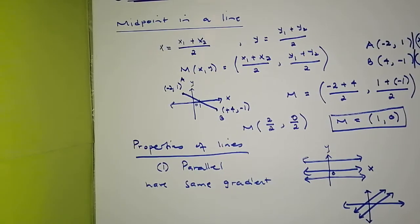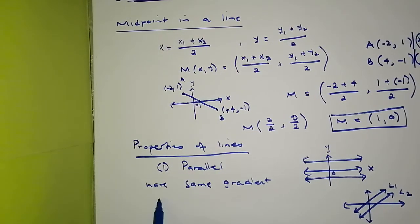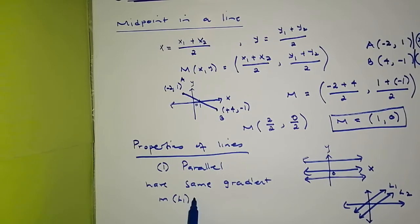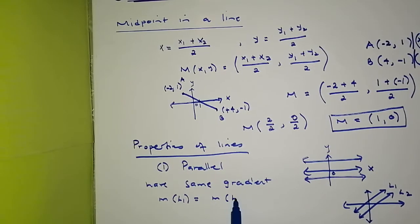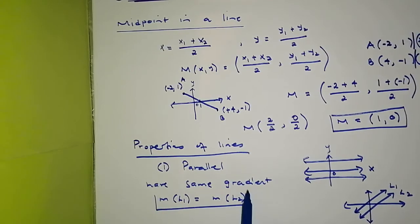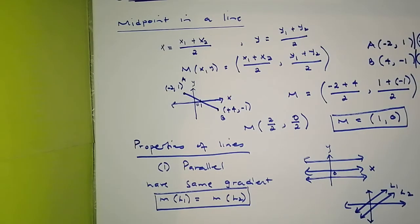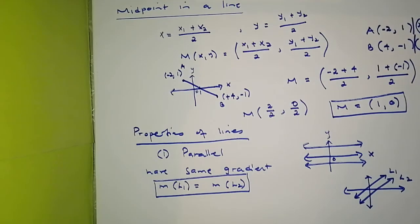Let's say this is line one and this is line two. The gradient of line one equals the gradient of line two. Whenever you see parallel lines, they have the same gradient.